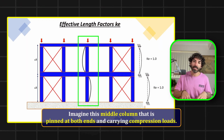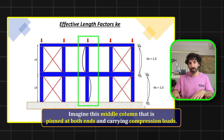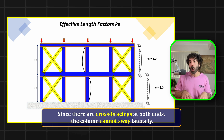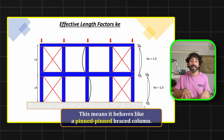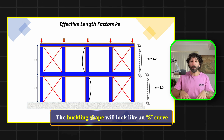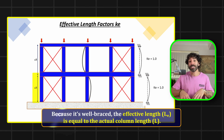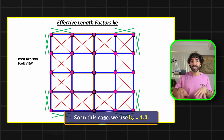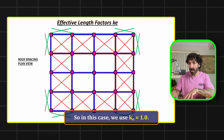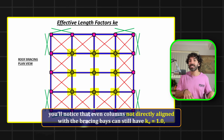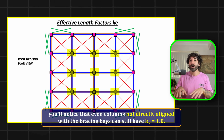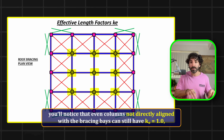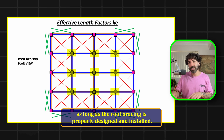Consider a middle column that is pinned at both ends with cross-bracings at both ends — it cannot sway laterally. This means it behaves like a pinned-pinned braced column, and the buckling shape will look like an S-curve. Since it's well braced, the effective length LE equals the actual column length L, so KE = 1. Looking at the roof plane view, even columns not directly aligned with the bracing bays can still have KE = 1, as long as the roof bracing is properly designed and installed, effectively tying all columns together.